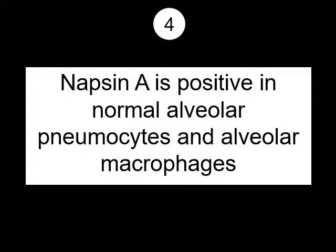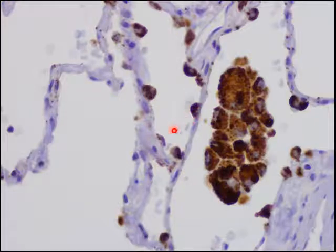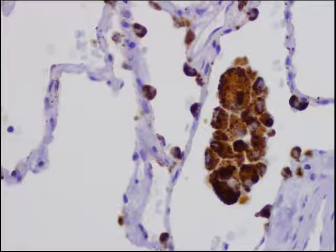Fourth important fact: Napsin A is positive in normal alveolar pneumocytes and alveolar macrophages. In other words, Napsin A is not a marker of malignancy — it's just a marker of lung epithelium. Napsin A tends to spill over into alveolar macrophages, which TTF1 does not do, making Napsin A a slightly dirtier stain than TTF1. You do need to be cognizant of this and be careful while interpreting Napsin A immunohistochemistry.